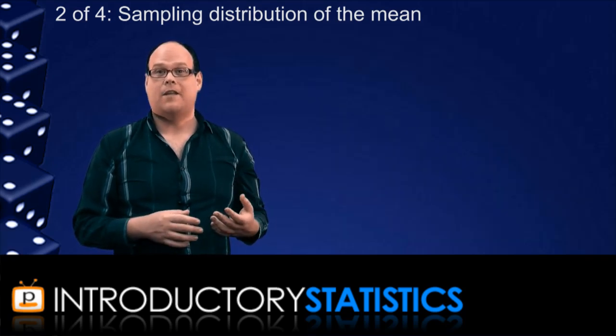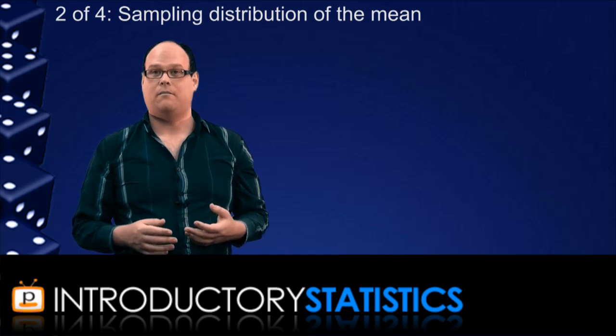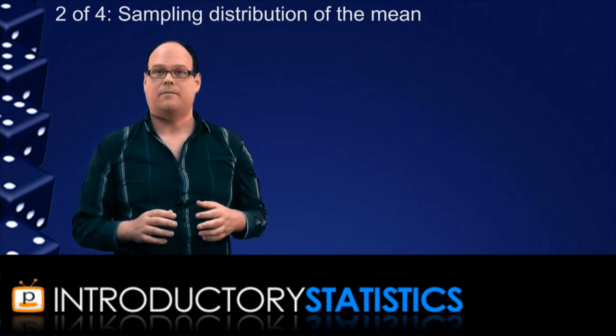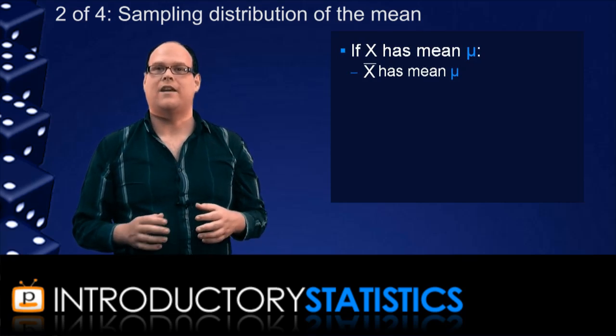So what sort of distribution is this? Well, as we mentioned earlier, the sample means will centre on the population mean, mu. In more precise terms, this means that the population mean of X bar is the same as the mean of the original population, X.